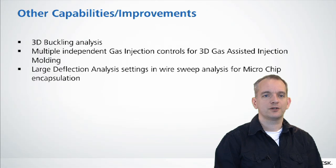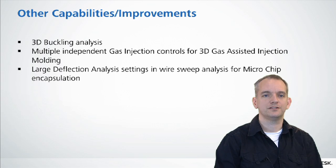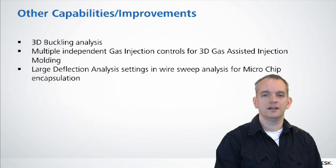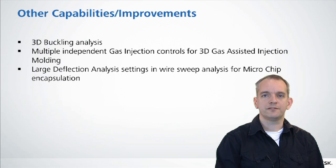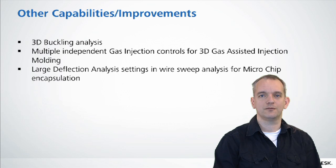Some other capabilities added to the code include 3D buckling analysis. For the last release we added 3D large deflection warp, and buckling at the time was very memory and time consuming. We made good algorithmic improvements to bring that memory and time consumption down tremendously, so it's a lot more practical now. We also added the ability to run several different gas controls through gas injection molding — in the past we could only run one gas cylinder, but now you can add as many gas cylinders as you want. For large deflection and wire sweep settings, you can now access and specify how you want your large deflection wire sweep analysis to run.